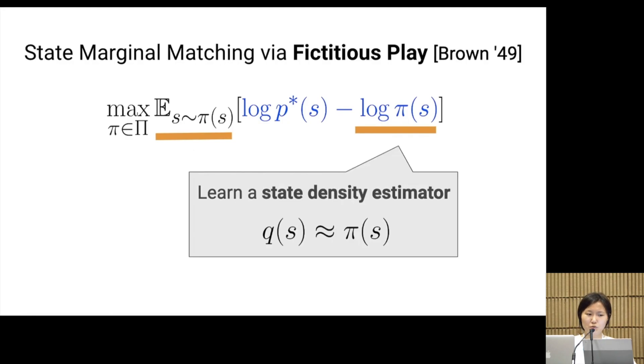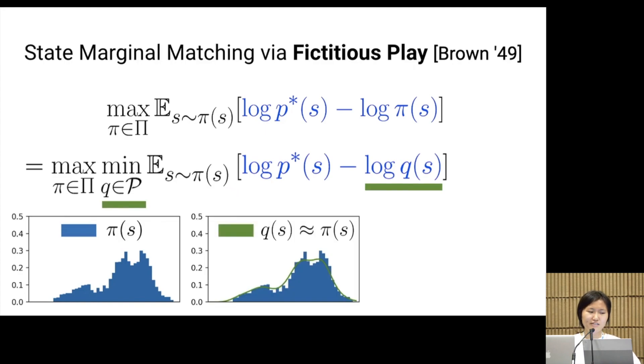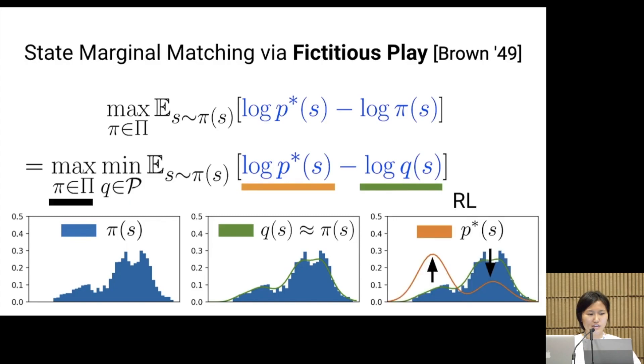To break this cyclic dependency, we learn a separate density estimator q that approximates the state marginal distribution. We replace the true density with q in the reward function. Then the objective becomes a two-player zero-sum game between the policy π and the density q. Note that there always exists a fixed-point solution by Nash's theorem.